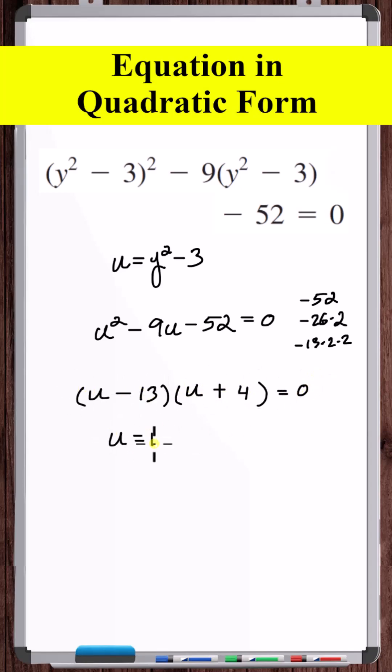So u is equal to 13 and u is equal to minus 4. But u is equal to y squared minus 3. Let's solve this quadratic equation.